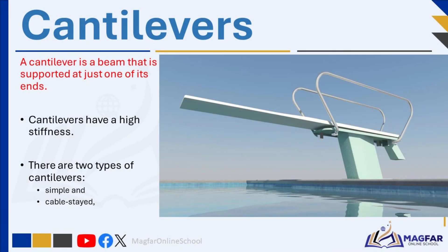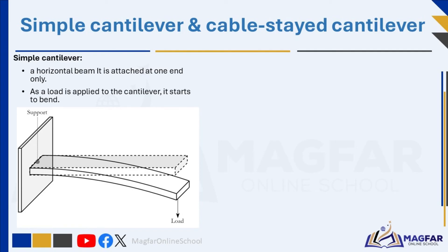Cantilevers are beams that are supported only at one end and extend horizontally beyond the support. Cantilevers rely on support at the fixed end to resist bending caused by weight acting on the free end. A swimming pool diving board is attached to a support on one side only — this is a good example of a cantilever. Cantilevers can be made of steel, concrete, wood or other materials, and can be used for balconies, roofs, bridges and cranes. Cantilevers have a high stiffness. There are two types of cantilevers: simple and cable-stayed. A simple cantilever is a horizontal beam supported at one end that spans a space. As a load is applied to the cantilever, it starts to bend. Examples include a balcony, diving board, roof, and verandas in houses.